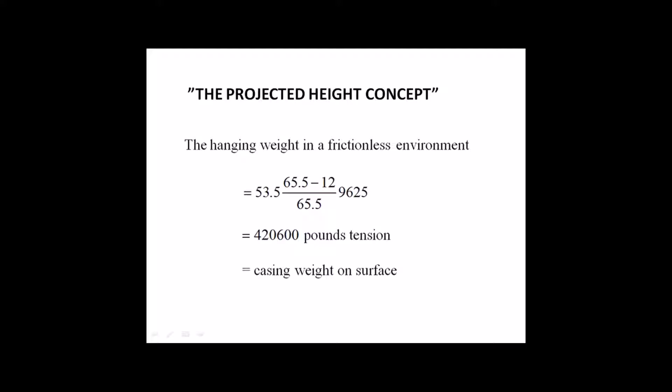The projected height concept states that the axial force in the well tubular without downhole friction depends upon the vertical depth and that the measured depth does not matter. In a frictionless environment, a casing that is 9,625 feet hanging in a vertical well will weigh the same as a 14,000 foot long casing with its bottom at 9,625 feet through vertical depth. The hanging weight in a frictionless environment is 420,600 pounds. This is the casing weight suspended at the surface if there is no well friction.